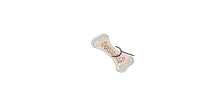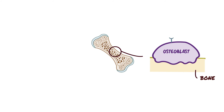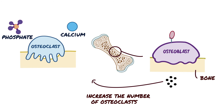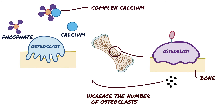Parathyroid hormone works to increase extracellular calcium in three ways. First, in the bones: parathyroid hormone receptors are located on osteoblasts, which are the bone-building cells. Parathyroid hormone binds to receptors on osteoblasts and causes cytokine secretion. These cytokines then increase the number and activity of the bone-resorbing osteoclasts, which are bone-eating cells. Osteoclasts break down bone, and the two minerals that make up bone — calcium and phosphate — are released into the blood.